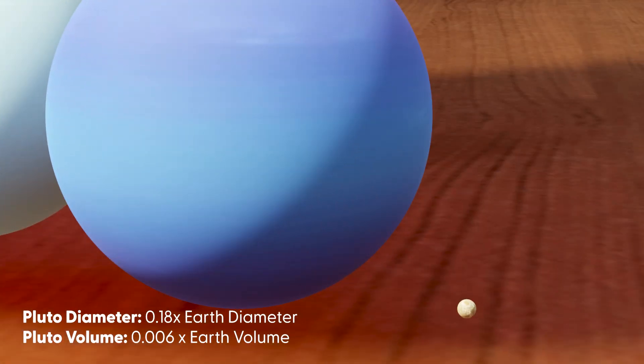Pluto, classified as a dwarf planet, is tiny compared to Earth, with only 0.18 times Earth's diameter and 0.006 times Earth's volume.